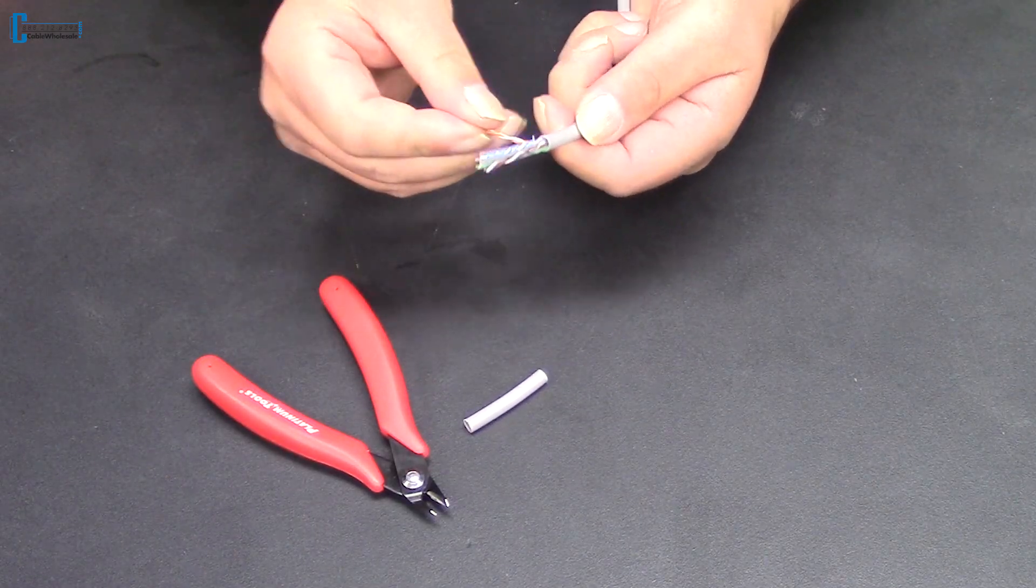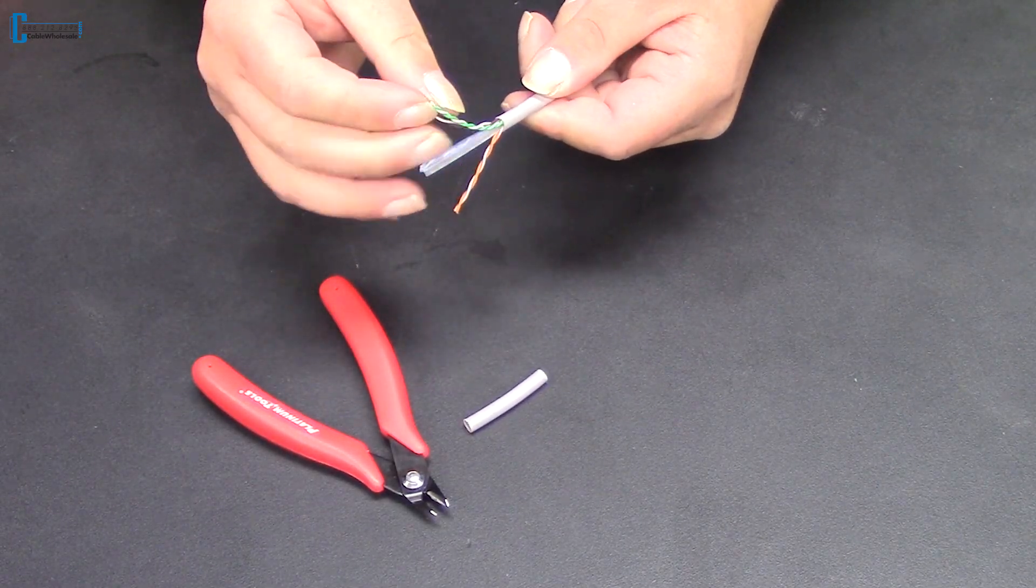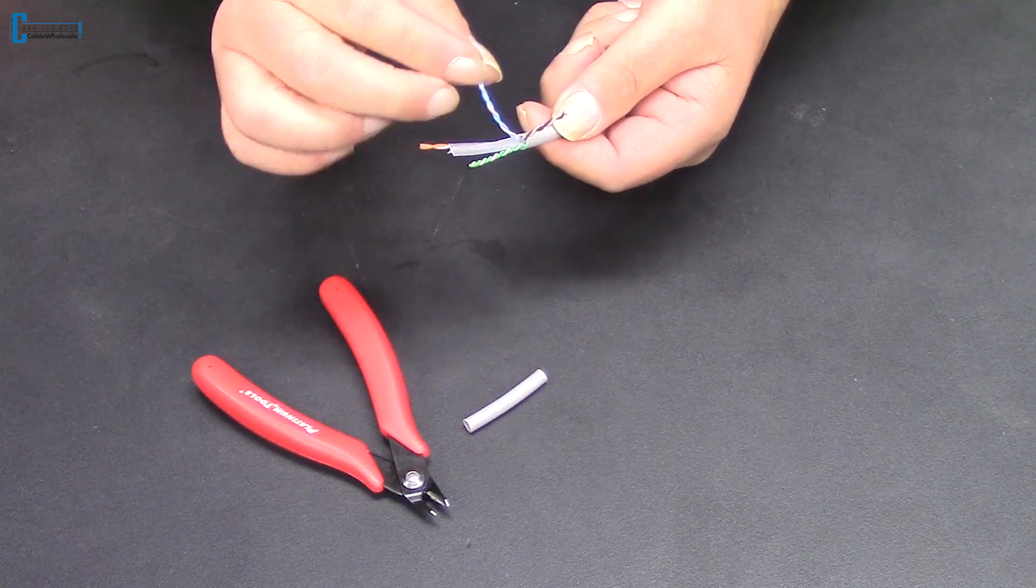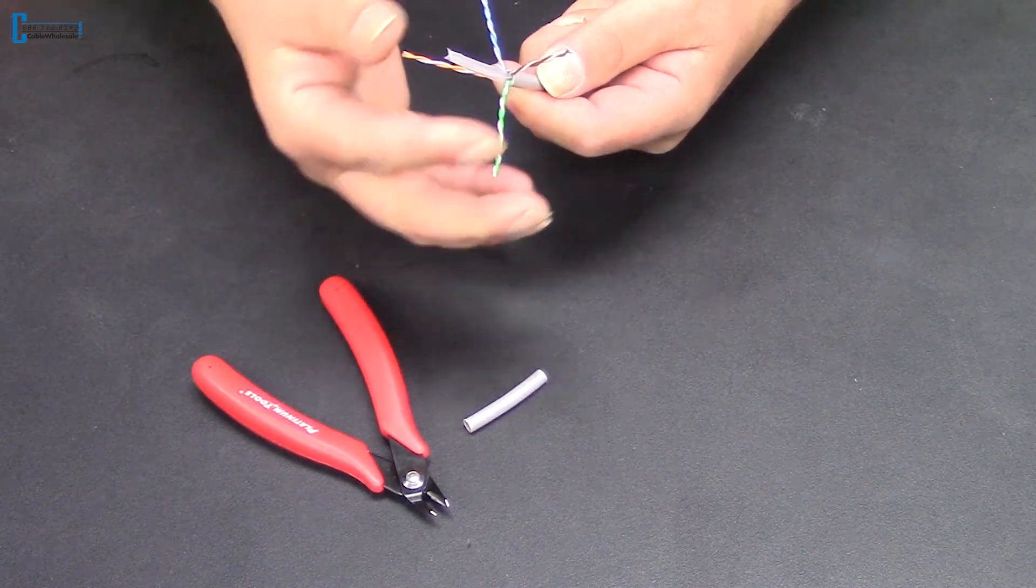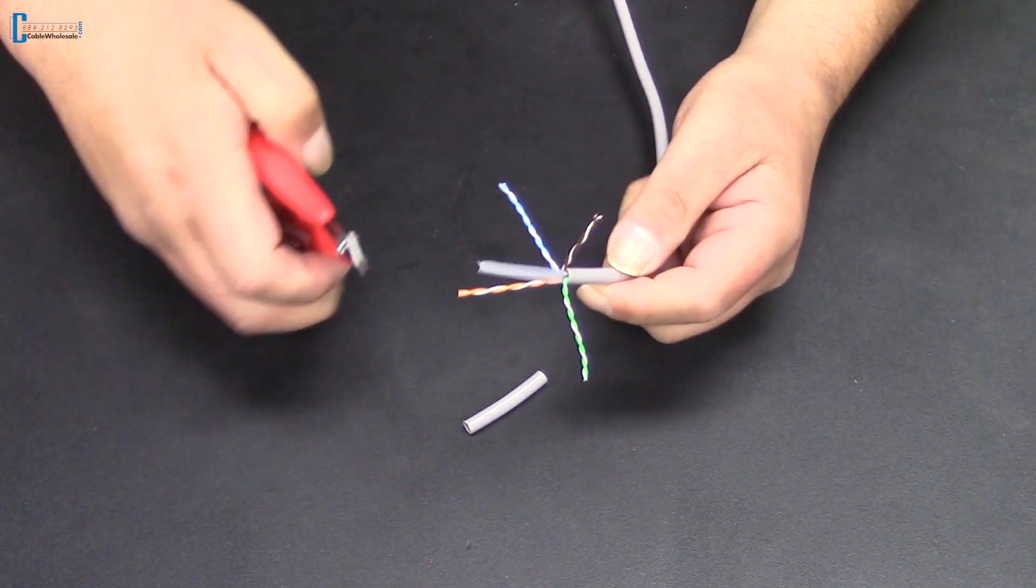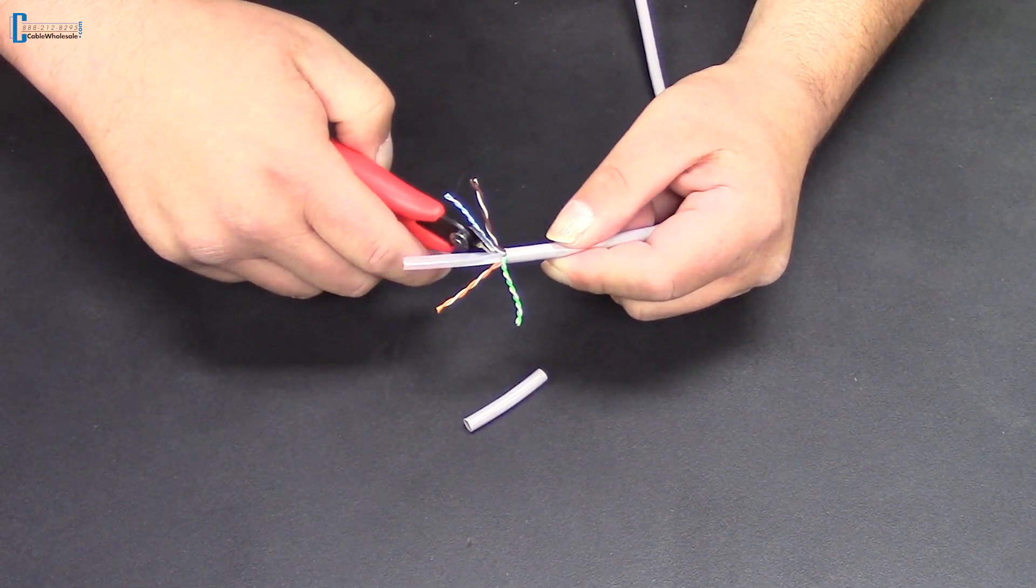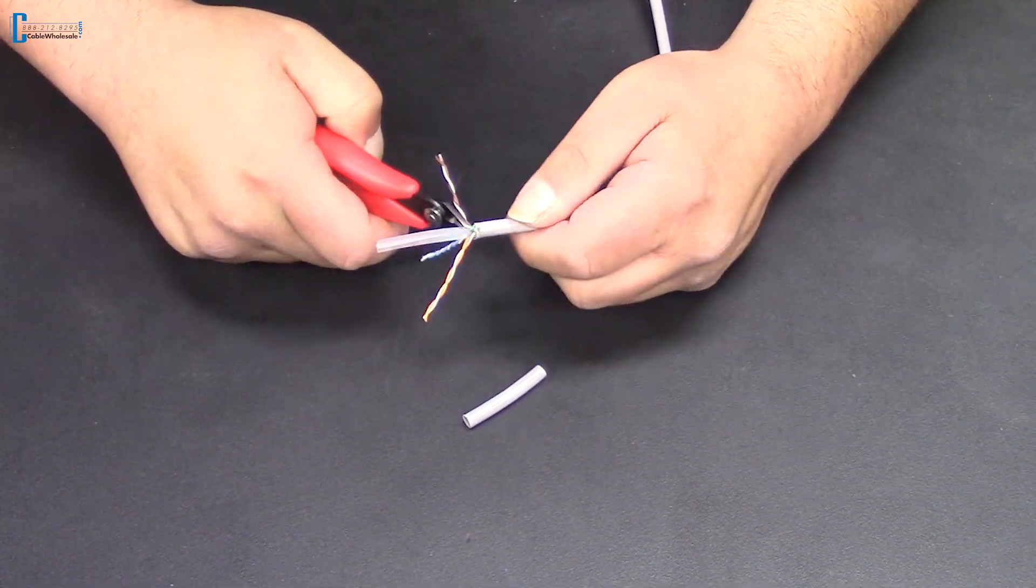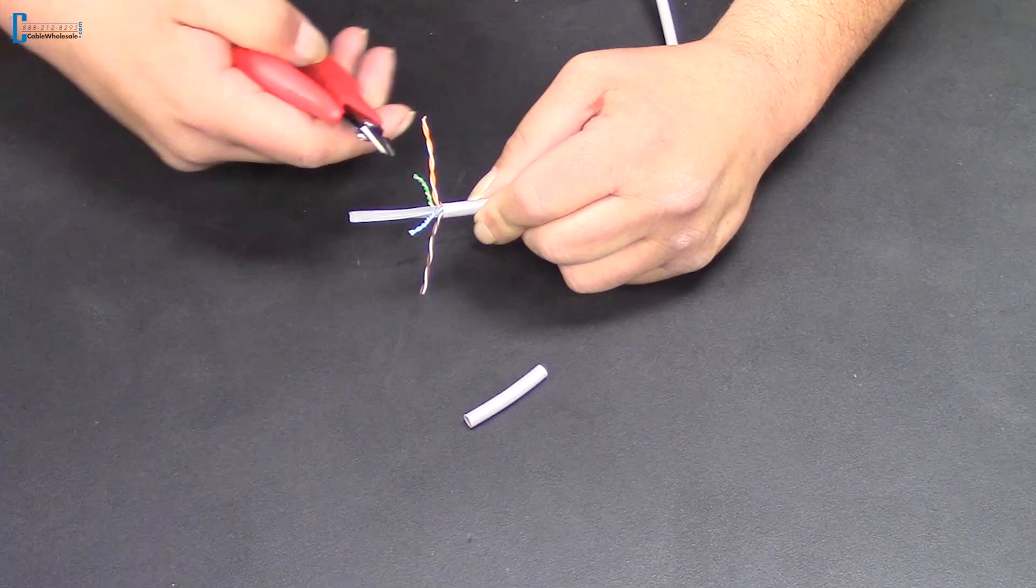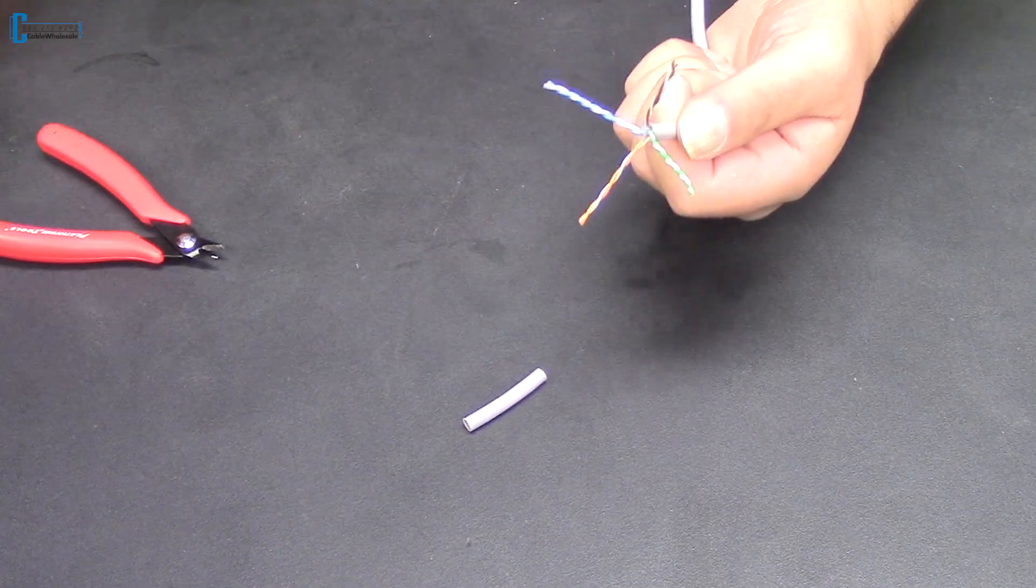Use the cutters to remove the center spline in the cable. Pull down the four twisted pairs to get them out of the way. Use your cutters to cut the four wings of the spline. Give it a twist and it should pull right off.